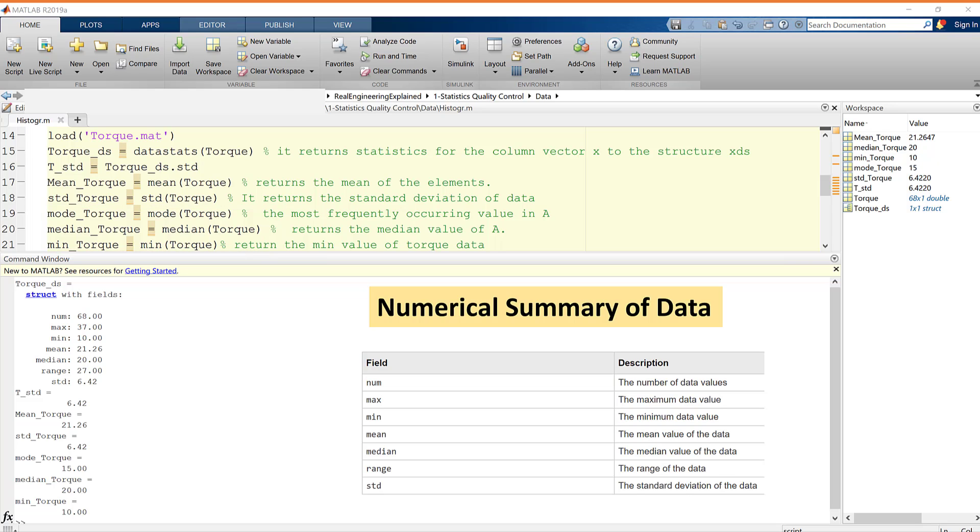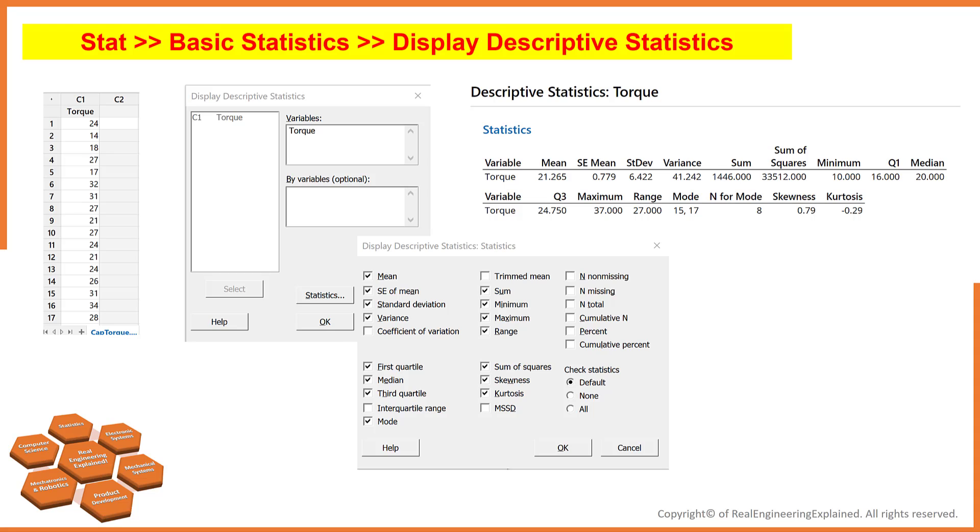Please note that the median is the middle number in a sorted ascending or descending list of numbers. You can get the similar result from Minitab. Go to Stat and then Basic Statistics and then Display Descriptive Statistics. In the variables section, select torque or column C1. Click on Statistics and select those information that you need, and then finally hit OK. Here is the summary of data.